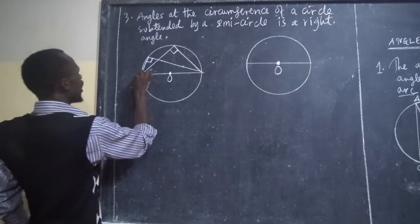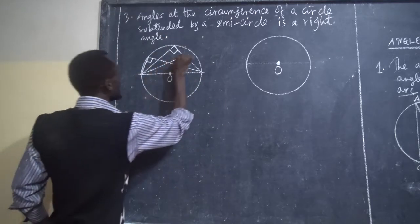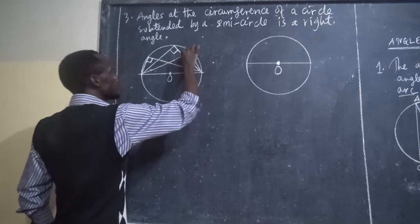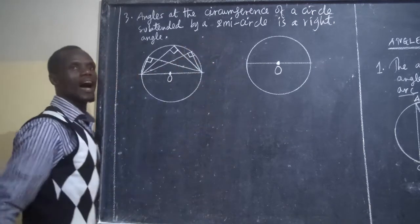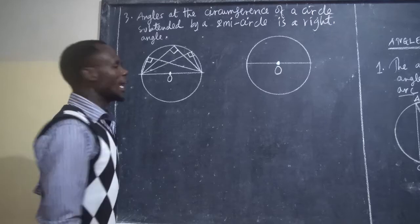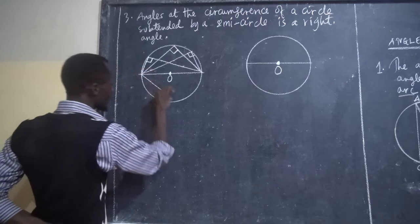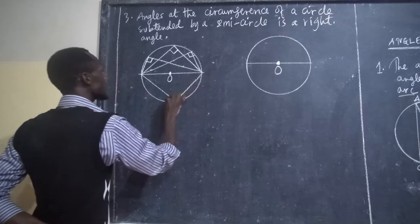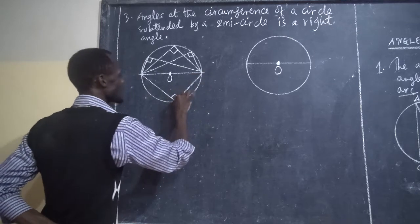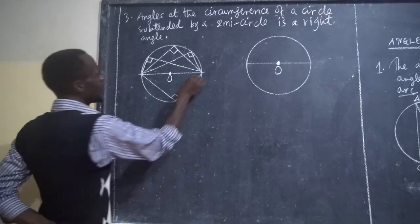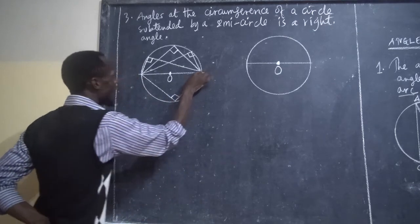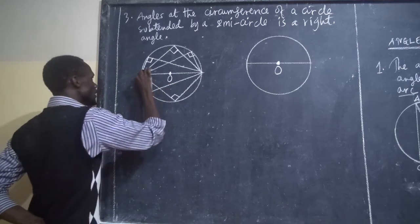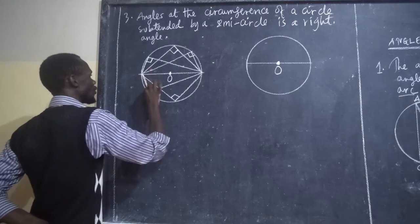If I draw another line from here and join to this one, this angle is a right angle. If I draw another line from here and then join to this one, this angle is also a right angle. No matter where you draw the line from, it is always a right angle.